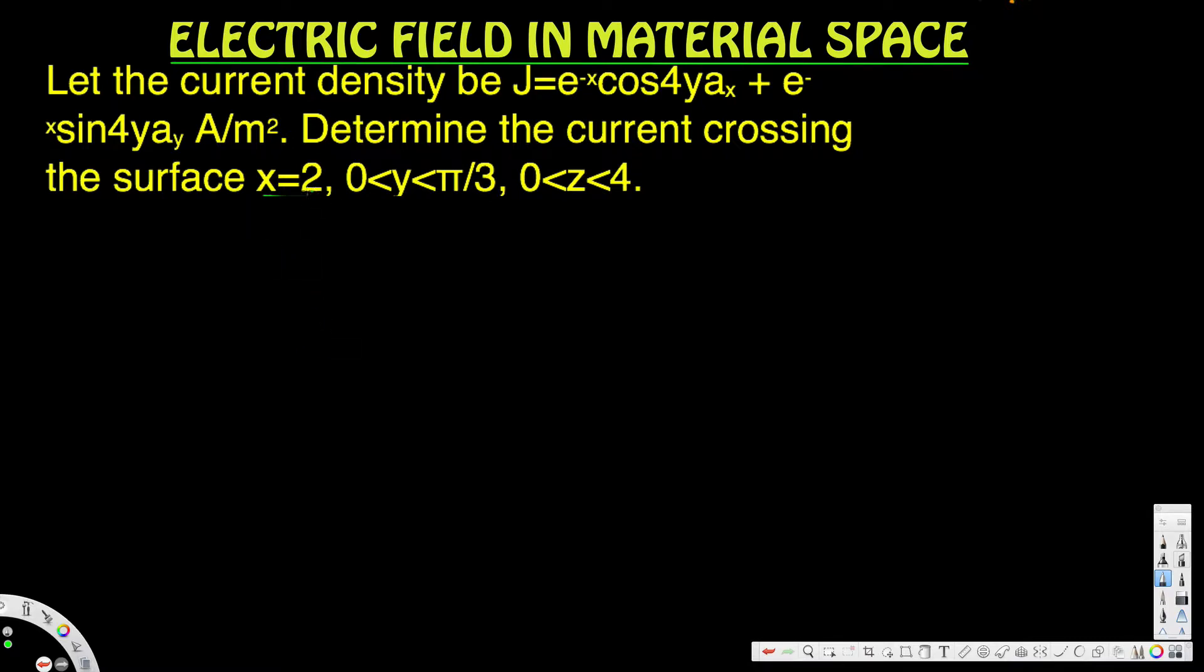What's going on guys, let's look at this problem. This question is asking: let the current density be J equals e to the negative x cos 4y ax plus e to the negative x